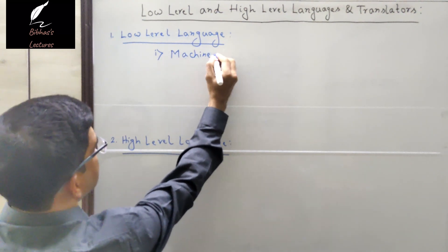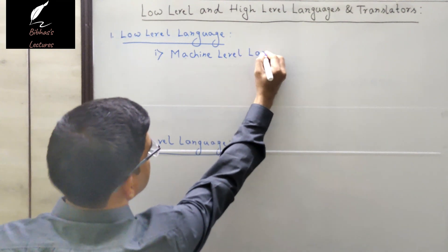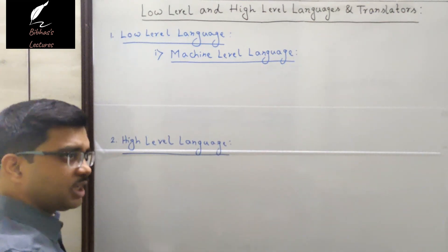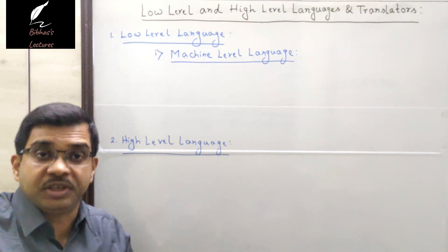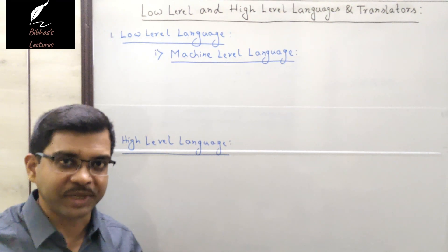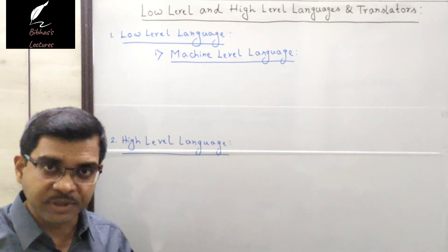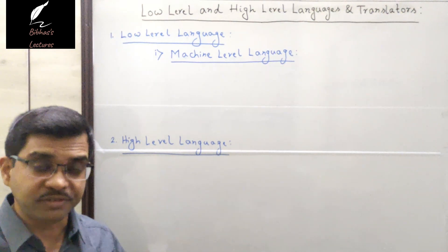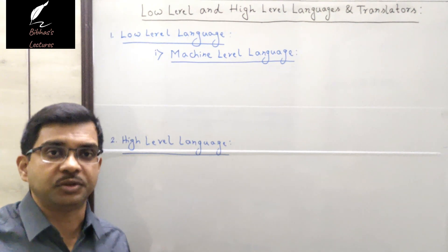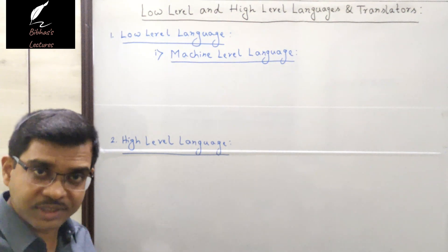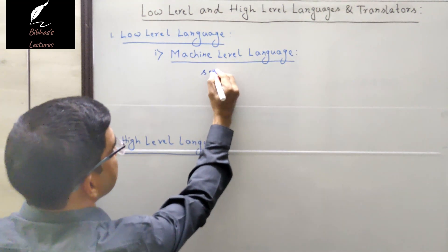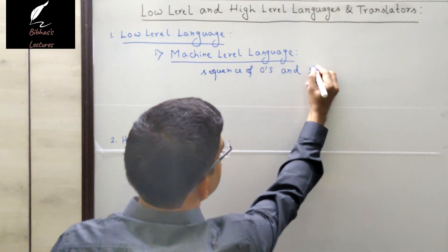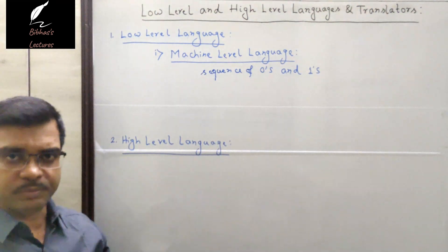What is machine level language? Machine level language means the language that the machine understands. As I told you in my previous video, the machine only understands two things: zero and one. That means in machine level language, instructions are written using binary code. Binary means only two different digits are used — zero and one — so instructions are written as a sequence of zeros and ones.